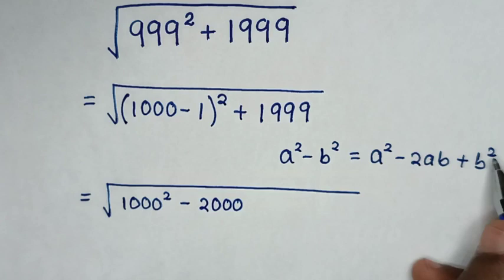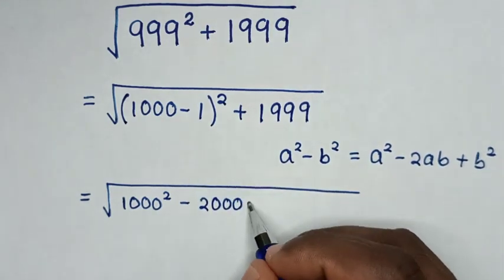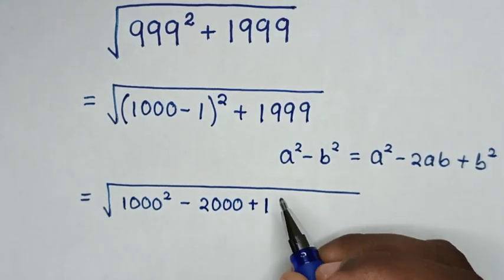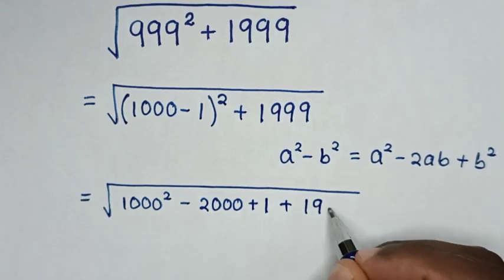Then plus b square. So b is 1, 1 square is same as plus 1, then plus this plus 1999.